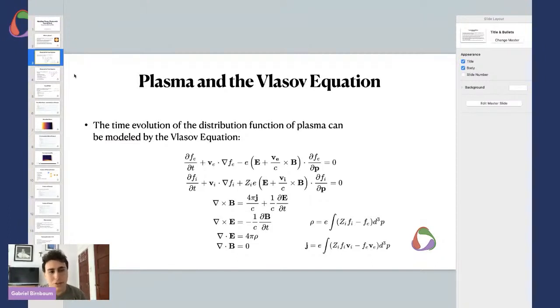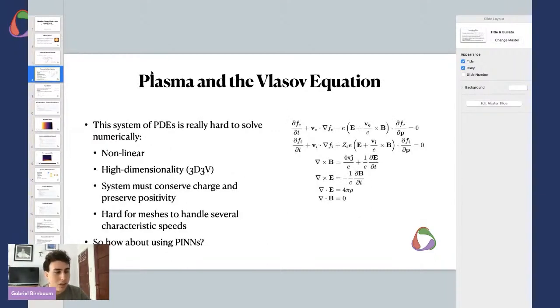That makes the whole system fairly hard to model as well. Because of that, it is pretty hard to solve this numerically, and we still don't have good models for it. Some other things make it harder, like the system needs to conserve charge and momentum and preserve positivity of the distribution function. And it's hard for the meshes generally to handle several characteristic speeds. You have waves that are really fast and waves that are really slow, and they're interacting together at all times. That's pretty hard to figure out.